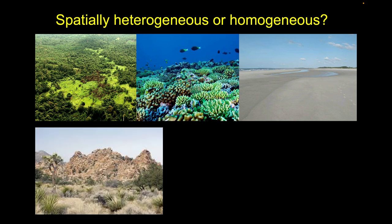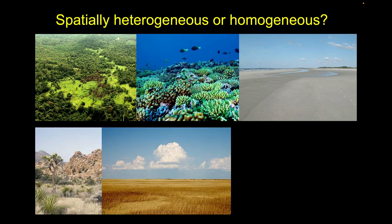Something like Joshua Tree again looks fairly heterogeneous to us — we have rocky outcrops, some vegetation, and Yucca brevifolia. Grassland is another one that might appear at first glance relatively homogeneous. There's actually some structure in there, but compared to a tropical rainforest, not as much heterogeneity.